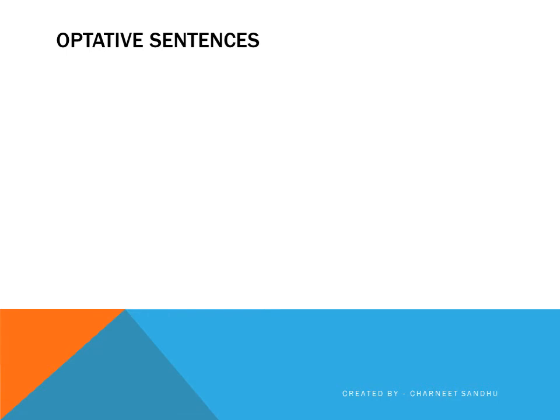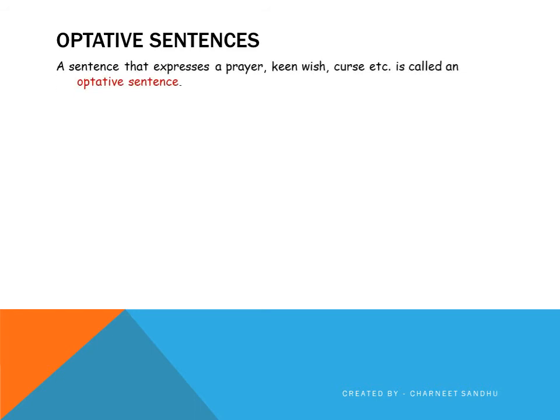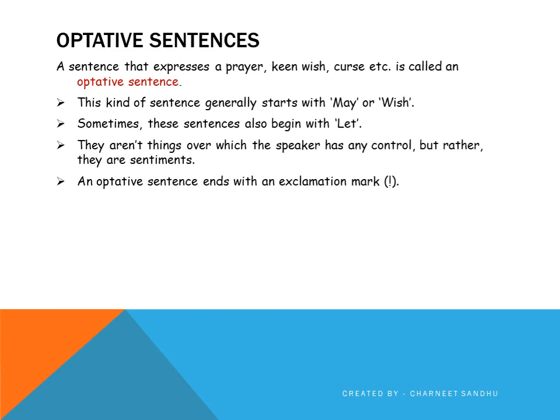Now, the next type I am going to discuss is not commonly used. From the point of view of examination, this kind of sentence is not asked. But since we are dealing with this topic, I want you all to know all the details and concepts, so I will be dealing with this as well. Optative sentences. A sentence that expresses a prayer, keen wish, curse, etc. is called an optative sentence. This kind of sentence generally starts with 'may' or 'wish,' and sometimes these sentences also begin with 'let.' They are not things over which the speaker has any control, but rather they are sentiments. An optative sentence ends with an exclamation mark.